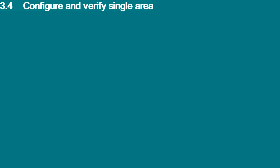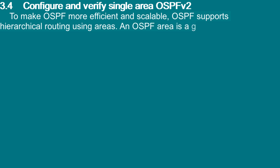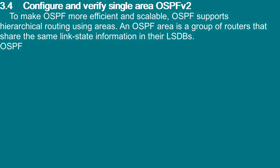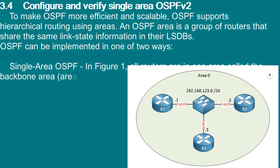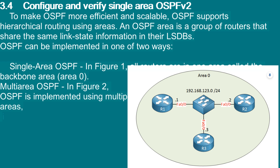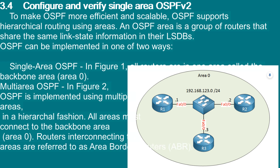3.4 Configure and verify Single Area OSPF v2. To make OSPF more efficient and scalable, OSPF supports hierarchical routing using areas. An OSPF area is a group of routers that share the same link state information in their LSDBs. OSPF can be implemented in two ways: Single Area OSPF, where all routers are in one area called the Backbone Area, Area 0; or Multi-Area OSPF, implemented using multiple areas in a hierarchical fashion. All areas must connect to the Backbone Area, Area 0. Routers interconnecting the areas are referred to as Area Border Routers, ABR.